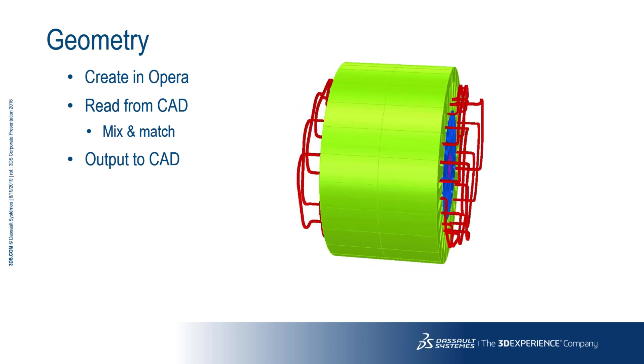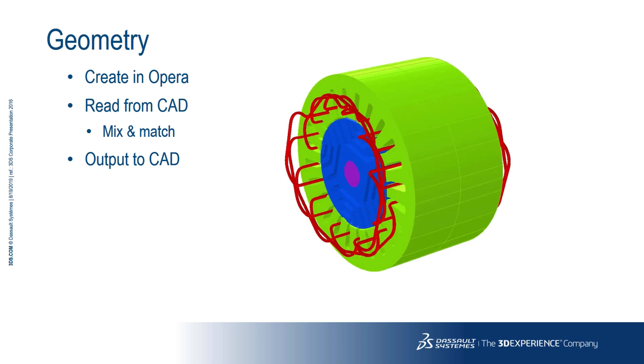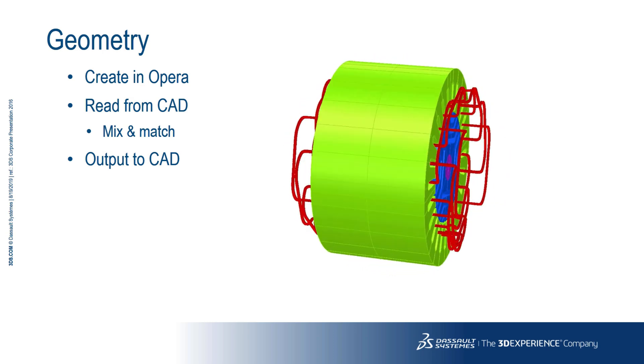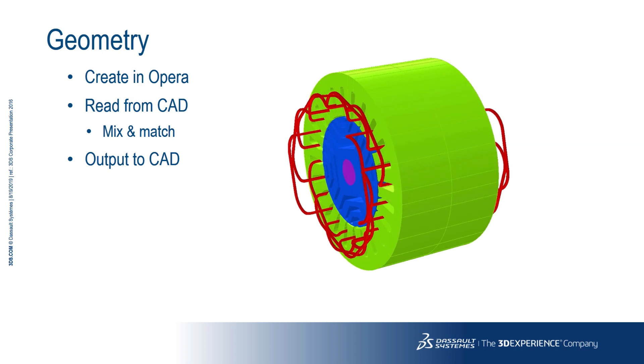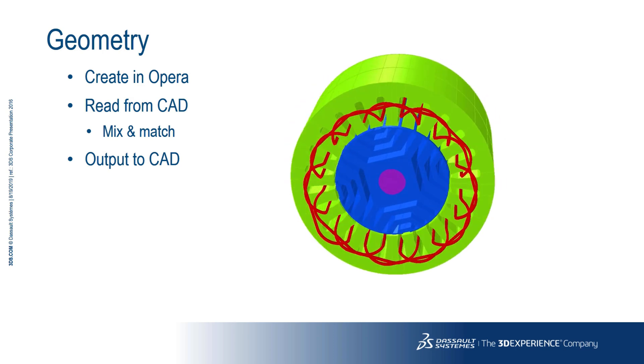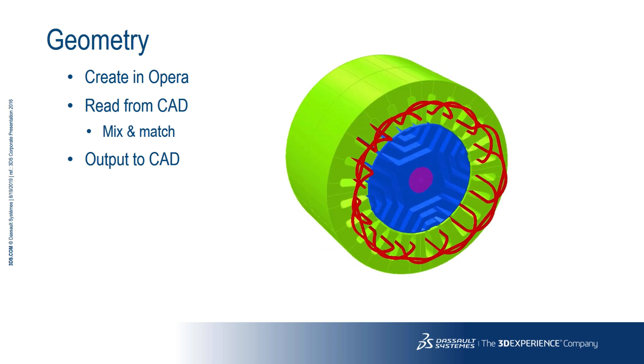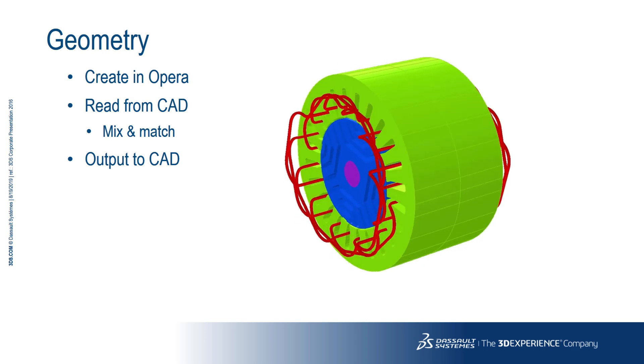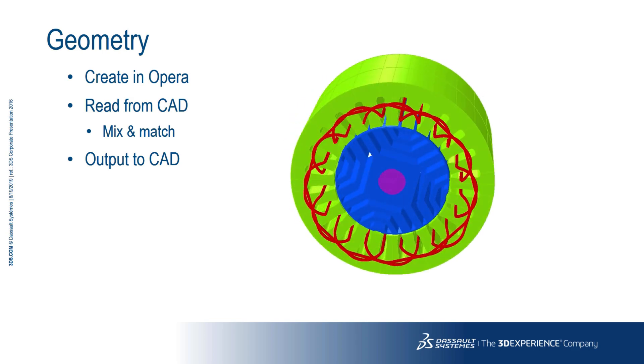Opera's 3D modeler contains the ASIS solid modeling kernel from Dassault System which can be used to generate complex parametric models. Alternatively it can read and write many different formats of CAD file both neutral formats and CAD specific. The geometry can be mixed. You can start in Opera, add a CAD model, then edit the merge models.